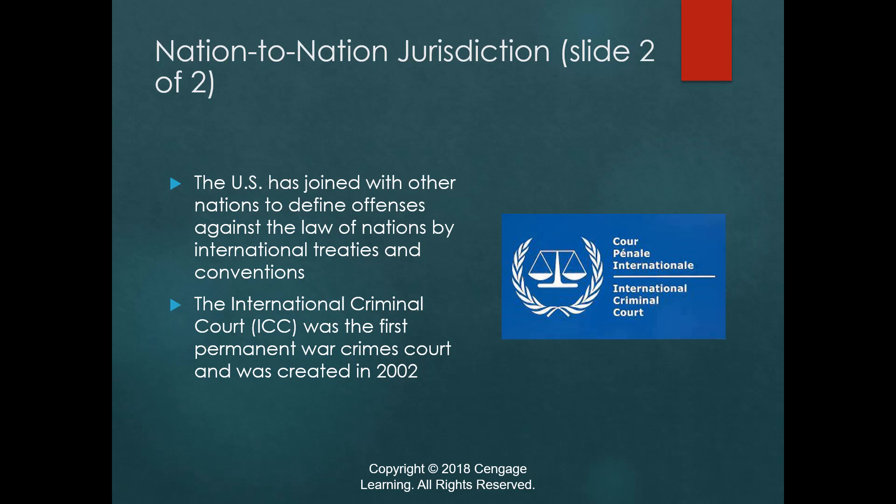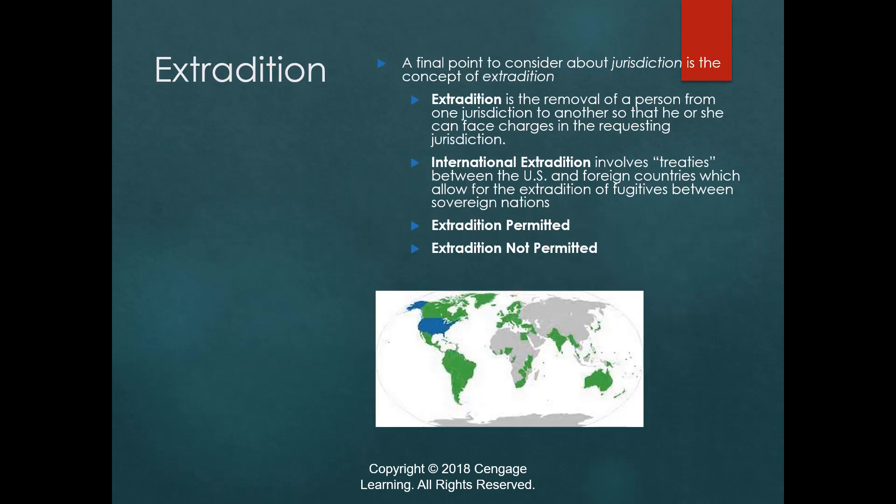Extradition is when a person commits a crime in one country and flees to another — the first country then seeks to have that person returned. If you killed someone in Raleigh and fled to Bolivia, we'd seek extradition under our treaty with Bolivia. This also happens state to state within the U.S.: if you commit a crime in Raleigh and are arrested in Virginia, North Carolina must extradite you from Virginia. It's a process, but it almost always goes forward.